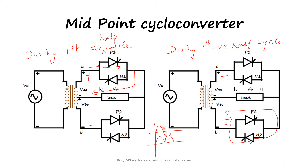During the first negative half cycle, point A will be minus and this will be plus. At this time if P2 is given the triggering pulse, then the current flow will be from plus, through P2, through the load, back to the supply. So in both cases the current flow is from right to left — the current flow is in the same direction. For a positive half cycle the current flow is like this, and for the negative half cycle also the current flow is like this.